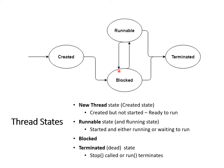Threads in the runnable state can either block — for example, trying to acquire a lock on a synchronized method — or they can terminate, moving into the dead state. Blocked threads can be woken up when a lock is released, and put back into the runnable state. This is the lifecycle: threads get created, they're runnable, they can get blocked by events like file IO or network IO, and eventually they terminate.